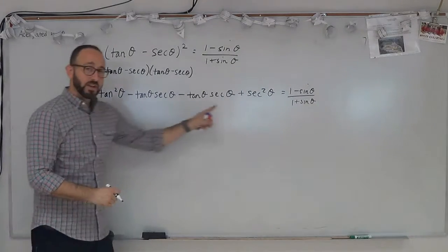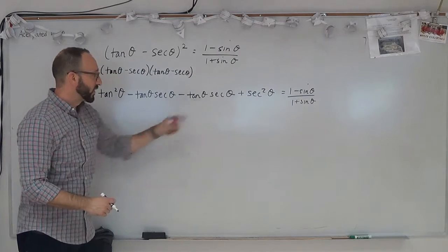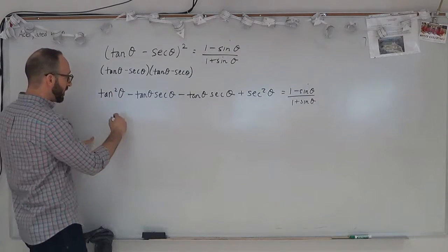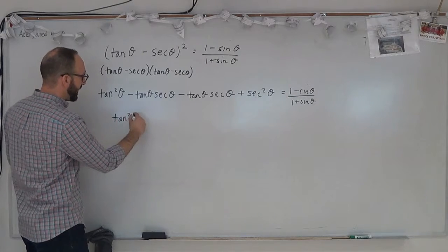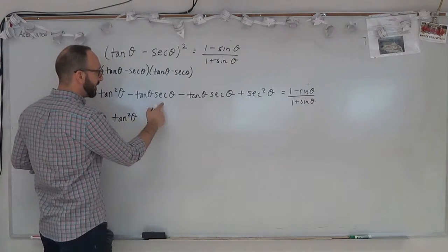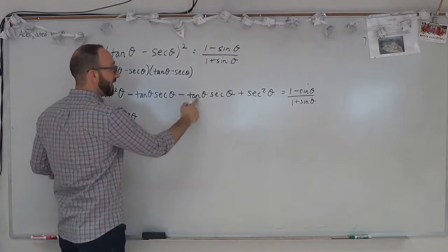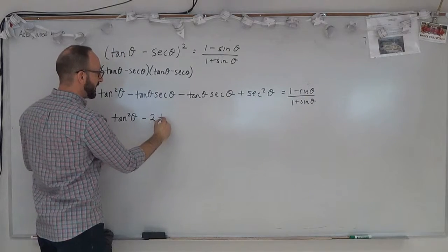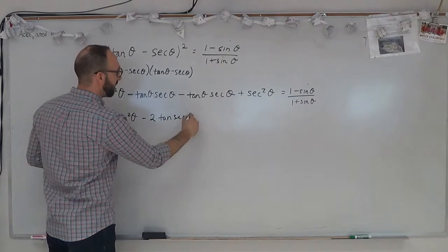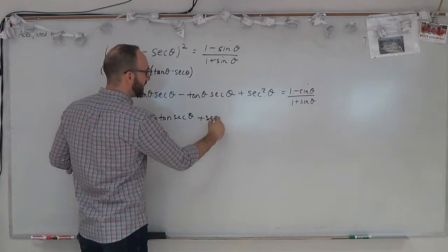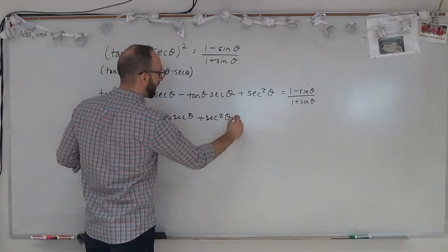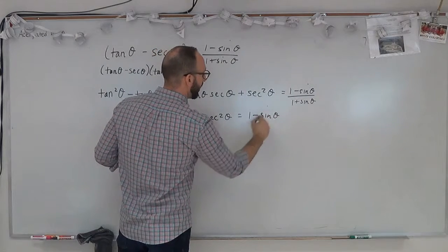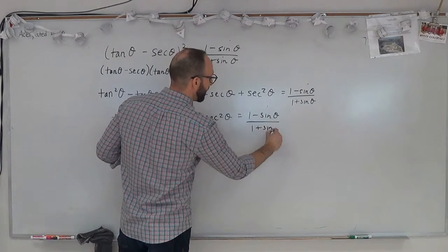On the left-hand side, we have some terms we can combine. So tan squared theta, minus tan secant theta and minus tan secant theta becomes minus 2 tan secant theta, plus secant squared theta. That equals 1 minus sine theta over 1 plus sine theta.